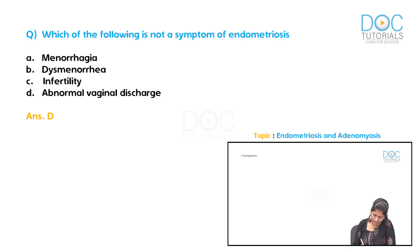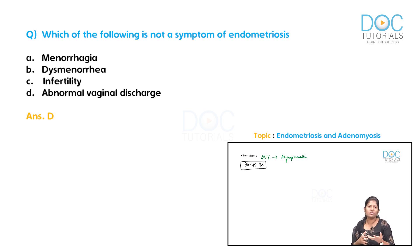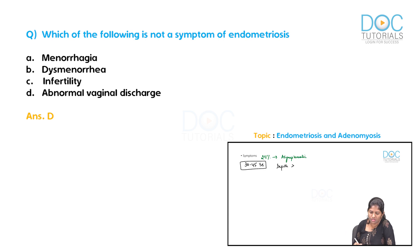In endometriosis, 25% of women are asymptomatic. The most commonly involved age group is 30 to 45 years. Endometriosis can spread superficially throughout the pelvis or go deep into one particular organ — depth of the lesion is more important than the spread. Non-pigmented lesions are more symptomatic than pigmented lesions.